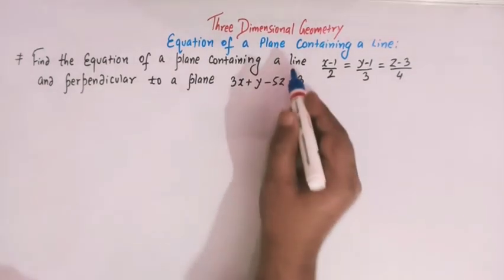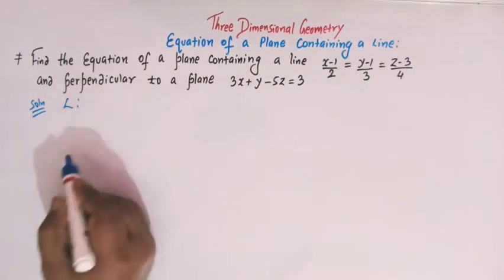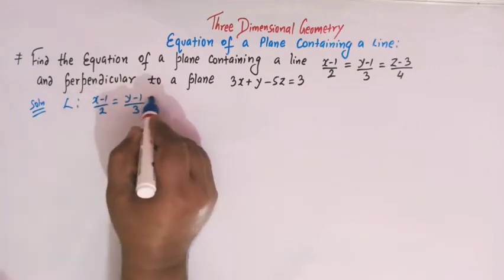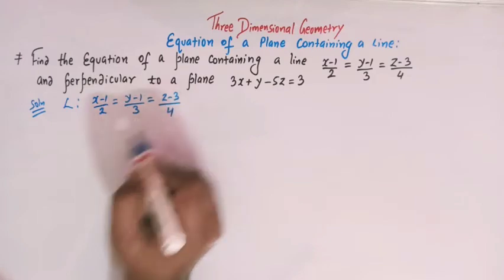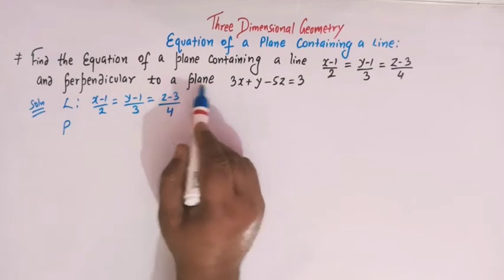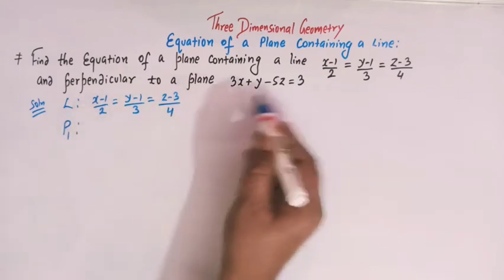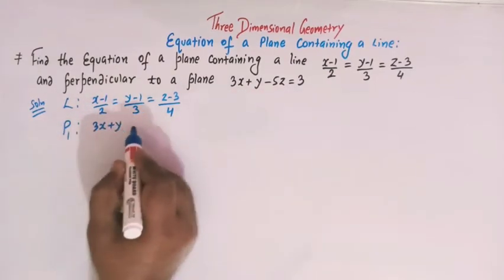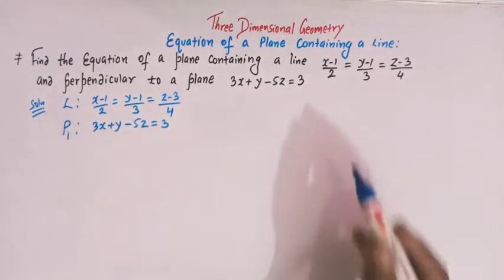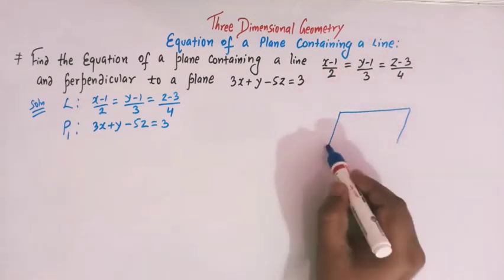We are given the equation of a line — let us denote the line by L. We have x minus 1 over 2, y minus 1 over 3, and z minus 3 over 4. We are also given the equation of a plane — let us denote this plane by P1 — and the equation is 3x plus y minus 5z equal to 3.